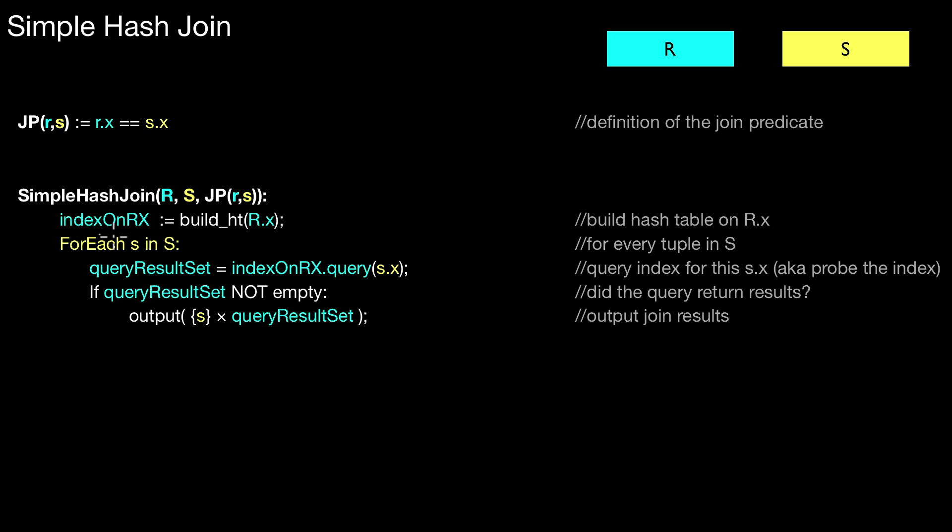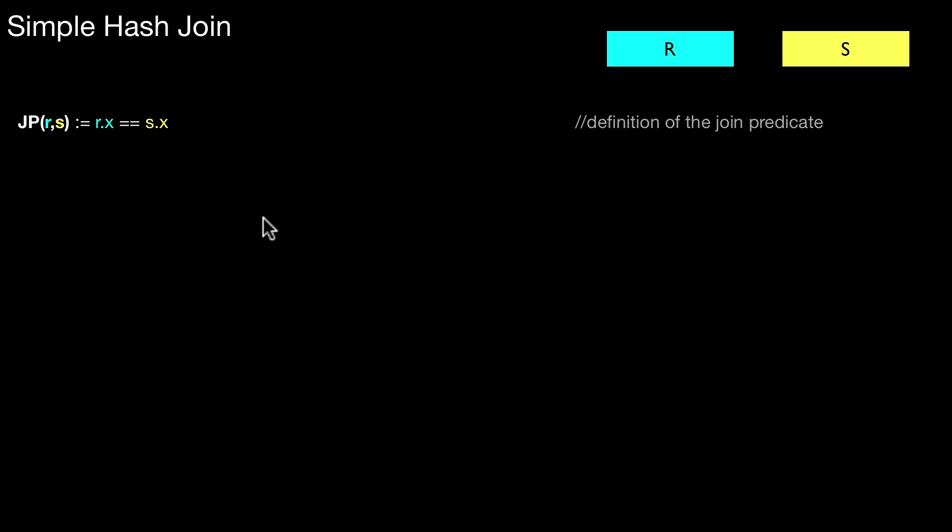Because the important thing that is different here in simple hash join is that we bulk load an index. We create this index from scratch. But what if this hash table already existed before? So let's assume the database has already a hash table on attribute r.x. How would that look like? Let's display it. So here we have it. Then we can ask the catalog to return us that specific index. So the index that is returned here is actually a hash table. The index returned is a hash table. Just like on the previous slide.